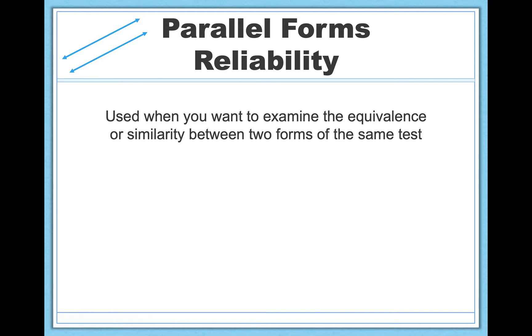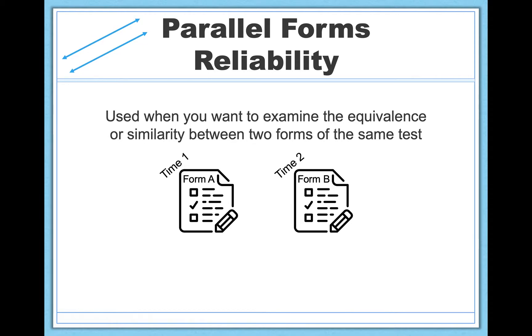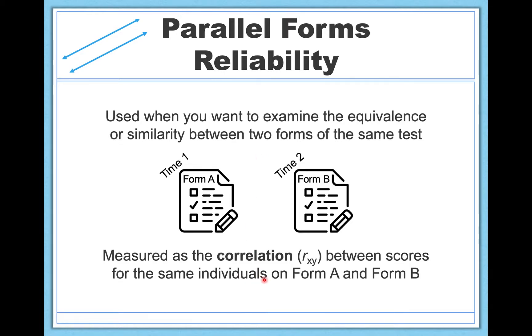And you're going to measure parallel forms reliability in a similar way as we did with test-retest reliability. You're going to give people form A in the beginning, maybe a week later or a month later. At time 2, you'll give them form B. So the only difference here, we're still measuring test and retest, but the difference is we have two different forms. It's not a copy and paste of the same test twice, which is what we have with test-retest reliability. So for parallel forms reliability, you're also going to measure it the same way. It's just going to be a simple correlation between scores for the same individuals on form A and form B at these two different time points. And again, we're going to hope for a strong positive correlation. We're going to hope that scores tend to be similar on form A as on form B.